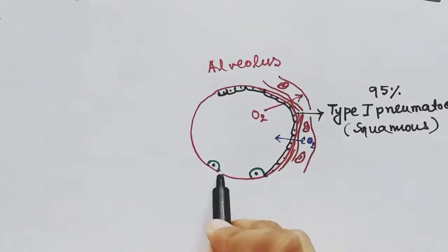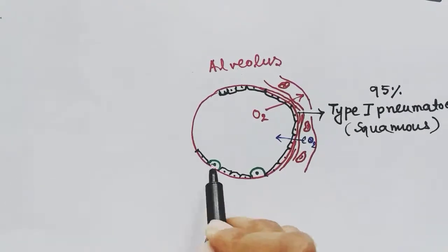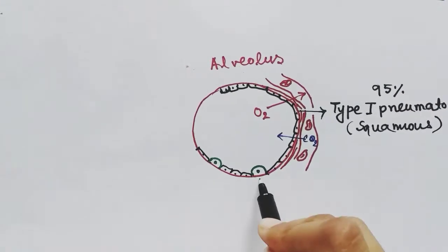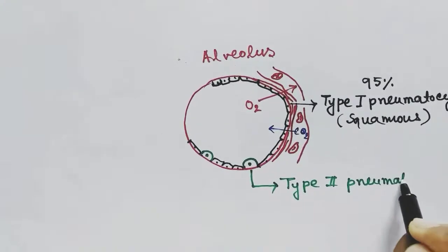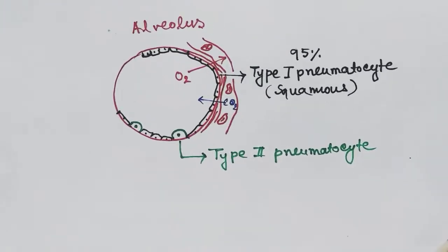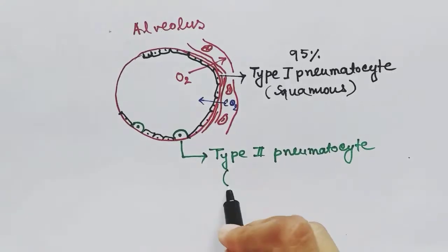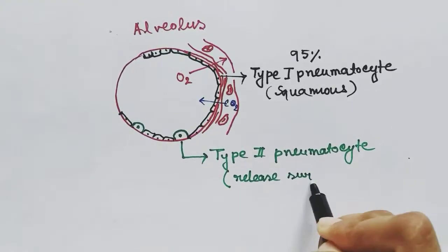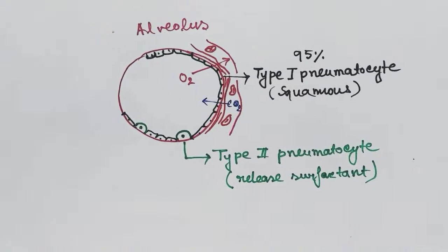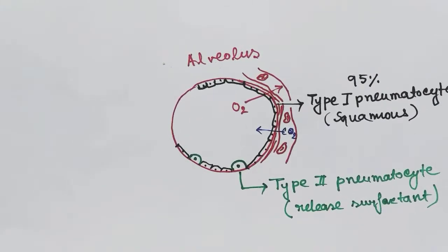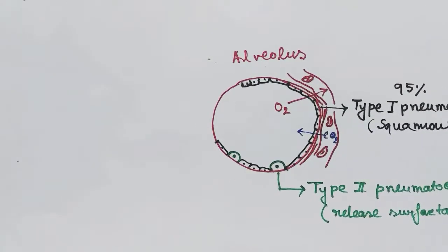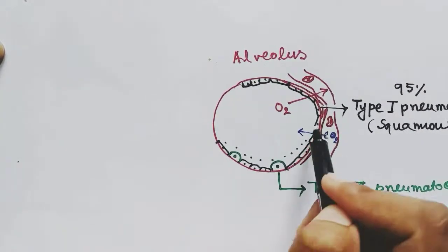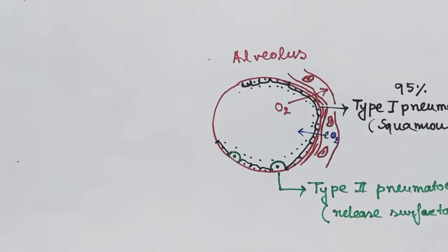Another type of cell in the alveolus is type 2 pneumatocytes. These cells are surfactant-releasing cells. It releases surfactant which helps in keeping the walls of the alveolus separate while expiration of the air. It helps in wall detachment.